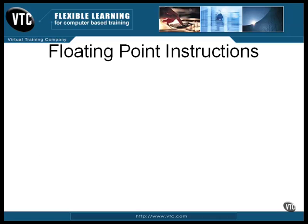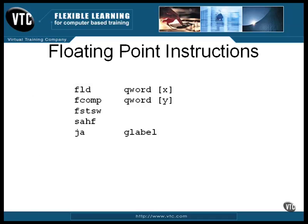This may seem a bit clumsy, but it's really pretty straightforward. This code snippet shows how it works. The FLD instruction copies a 32-bit floating point number from memory into register ST0, converting it to the internal 80-bit format. The FCOM instruction compares the contents of ST0 to the 32-bit floating point value in memory. The bits in the status word have been set, so now the status word is copied into the AX register. Then the AH register is copied into the flag register so the bits can be used for branching.